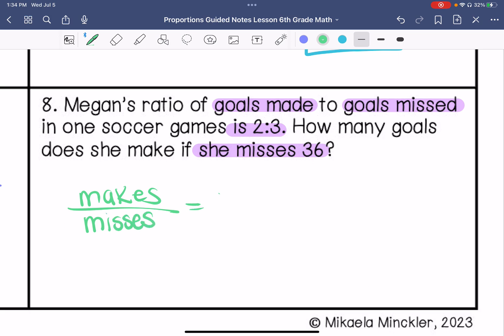So she makes and she misses. So she makes 2, she misses 3. So if she misses 36, how many does she make? That's times 12. 2 times 12 is 24 goals.